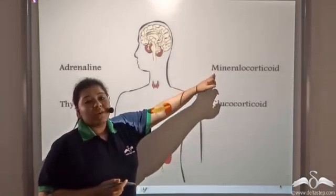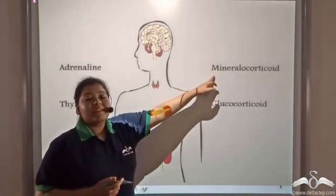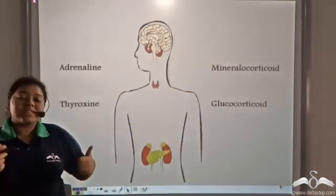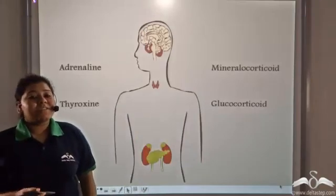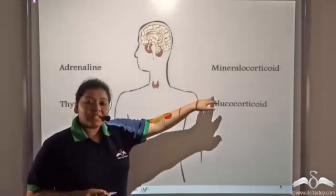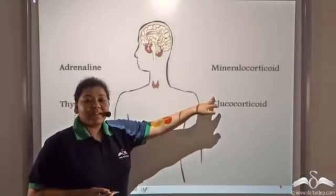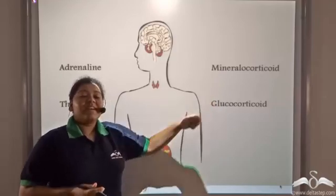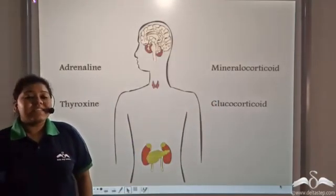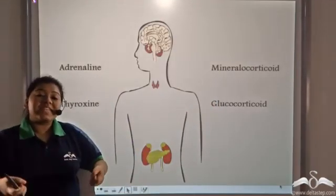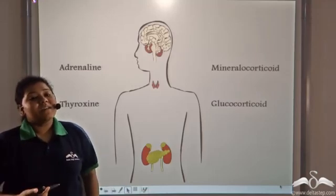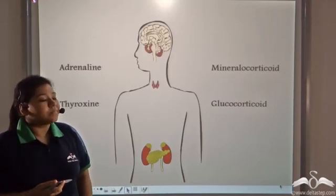Mineralocorticoids, given out by the cortex of the adrenal gland, help in mineral metabolism. That is, it tells the kidney to retain the sodium and excrete out the potassium.